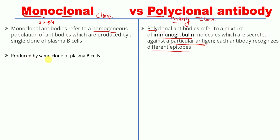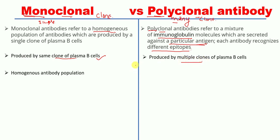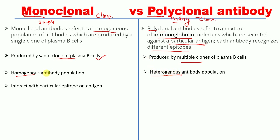Monoclonal antibodies are produced by the same single clone of plasma B cells, giving a homogeneous population. Whereas polyclonal antibodies are produced by multiple clones of plasma B cells, resulting in a heterogeneous antibody population.